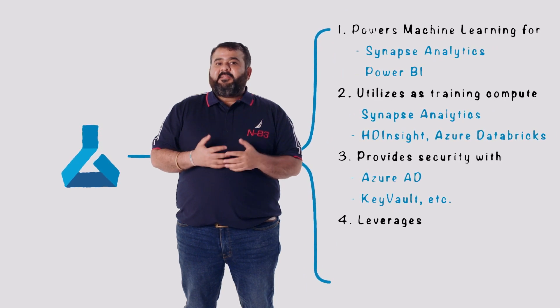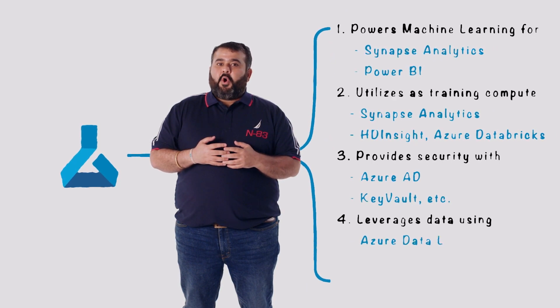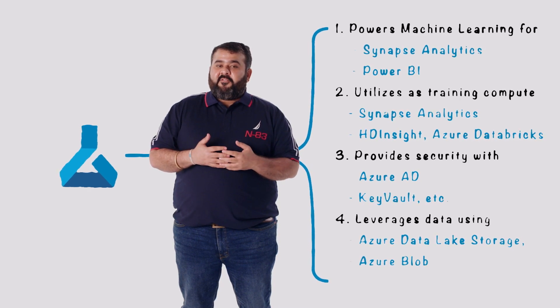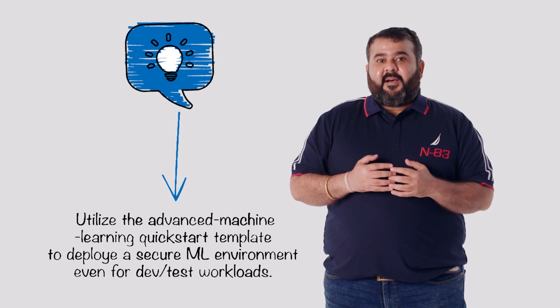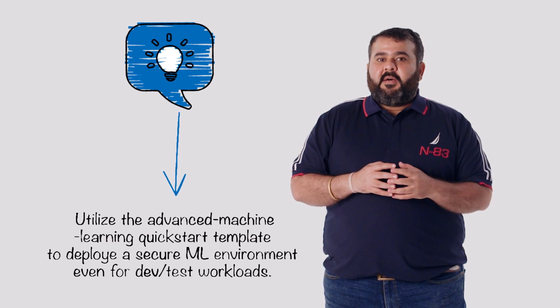For security, governance, and monitoring, Azure Machine Learning utilizes all of Azure's offerings like Azure Active Directory, Key Vault, Private Link, App Insights, and Azure Monitor. Pro tip: utilize the advanced machine learning quick start template to deploy a secure machine learning environment even for dev-test workloads. And for core services like databases, storage, and orchestration, Azure Machine Learning surfaces Azure SQL Database, Postgres, MySQL, alongside Azure Blob Storage and Data Lake Storage, and Azure Data Factory. These integrations show the richness of the ecosystem that Azure Machine Learning supports for various aspects of the enterprise machine learning pipeline.